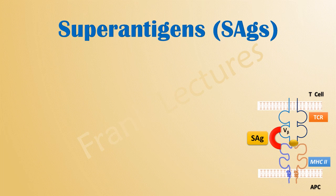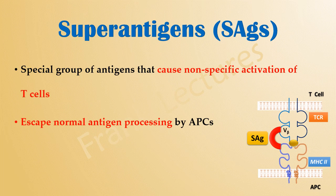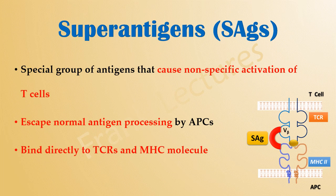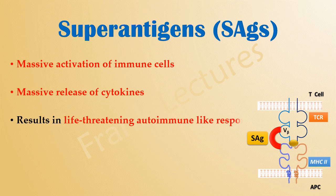In summary, superantigens are a special group of antigens that cause non-specific activation of T-cells. Superantigens escape normal antigen processing by antigen-presenting cells and bind directly to T-cell receptors and the MHC molecule. This non-specific binding promotes massive activation of immune cells and consequently massive release of cytokines, resulting in a life-threatening autoimmune-like response that can lead to endothelial damage and multi-organ failure.